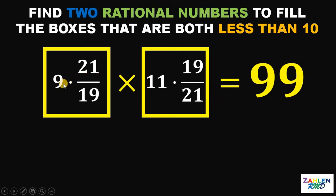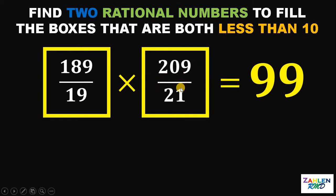Now, let's simplify first. 9 times 21 over 19 will give us 189 over 19. And 11 times 19 over 21 will give us 209 over 21. Now, we have 2 rational numbers that when we multiply, we get exactly 99.